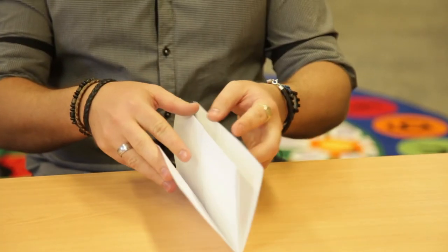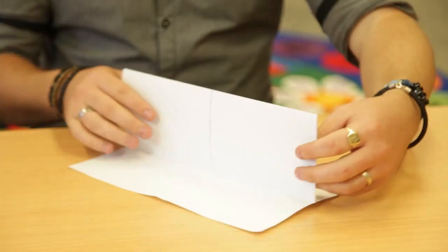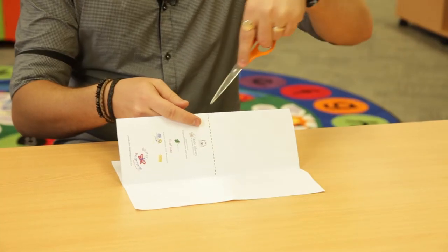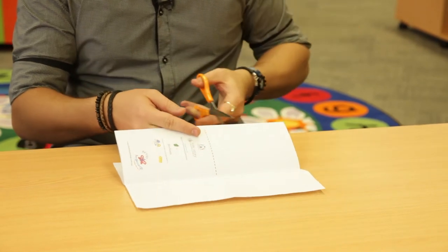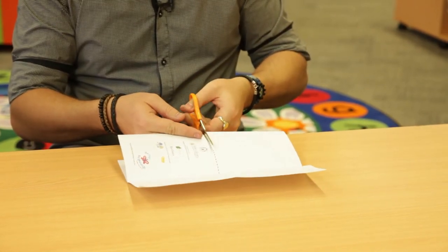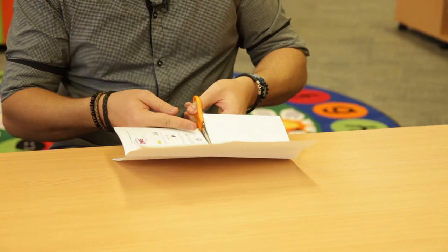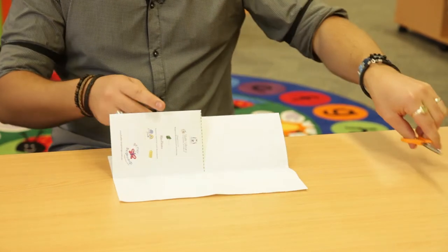When you open it up, you should have a piece in the middle. Spin it this way, take a pair of scissors and cut down the centre line, all the way to the crease.